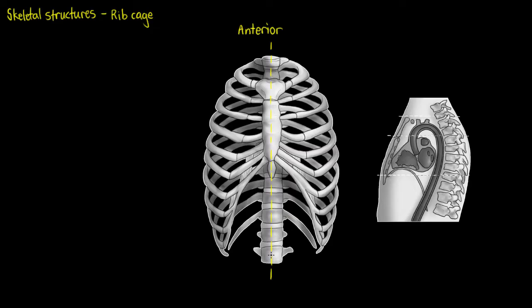A mid sagittal plane meaning it's right on the midline. Parasagittal meaning it's parallel to that mid sagittal line but not down the center.